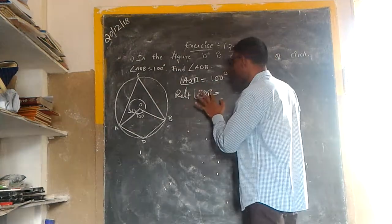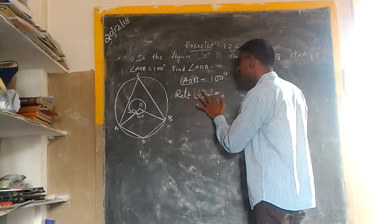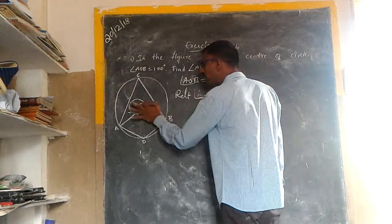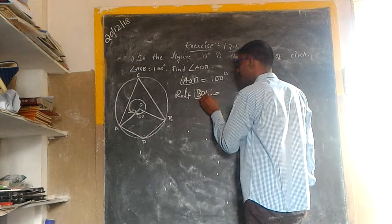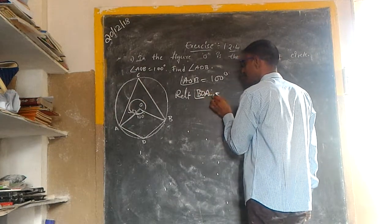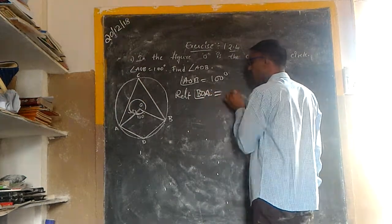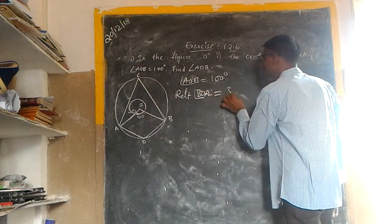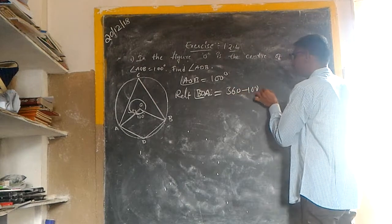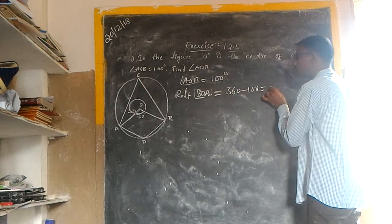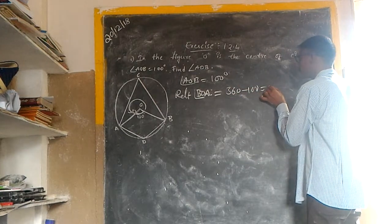The reflex angle AOB is equal to 360 minus 100, which is equal to 260 degrees.